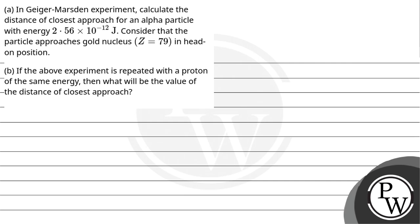Let's read the question. In Geiger-Marsden experiment, calculate the distance of closest approach for an alpha particle with energy 2.56 × 10^-12 joules. Consider that the particle approaches gold nucleus (Z = 79) in head-on position.